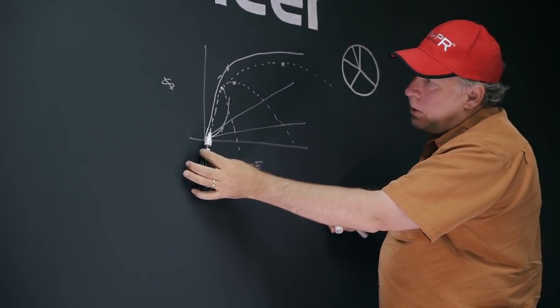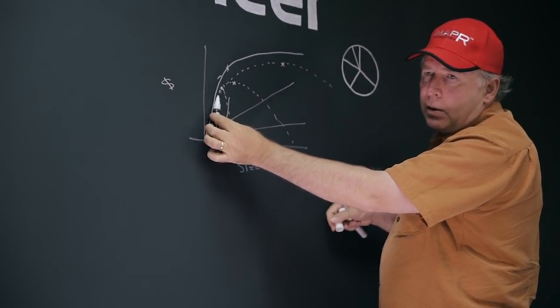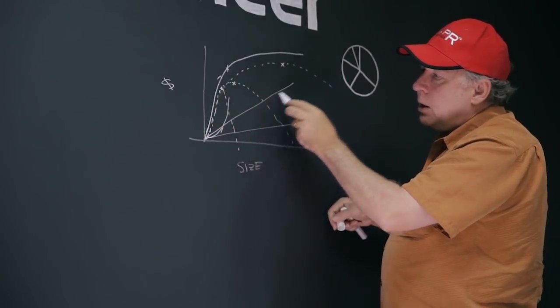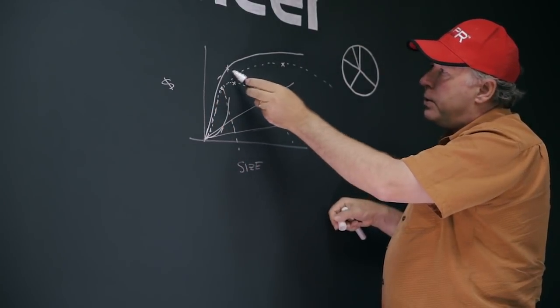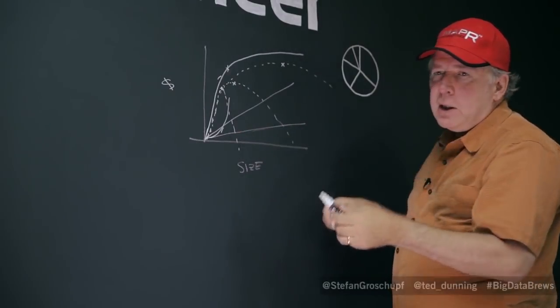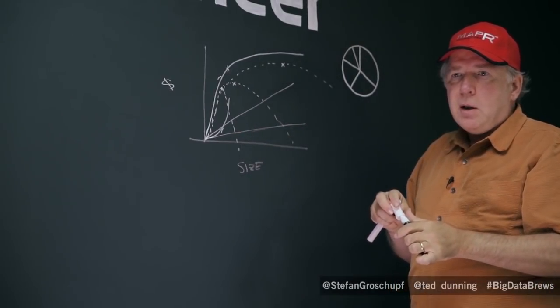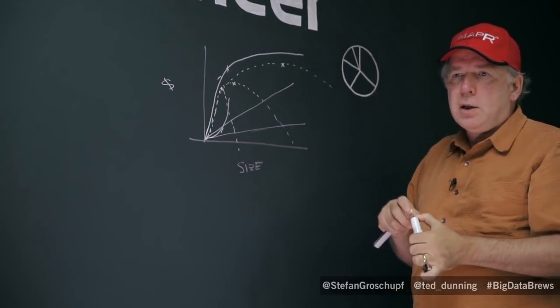All of computer science has been going up this thing, going toward the corner. Scalable big data computing allows us to escape the corner. It's a shape thing. It's a change of shape that's really driving this, not just cost.